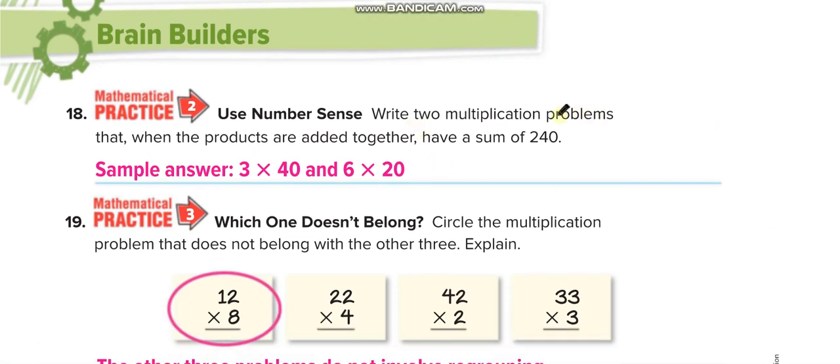Write two multiplication problems that when the products are added together have a sum of 240. So there are more—tell me more in the comment box. Like 3 times 40 is 120 and 6 times 20 is 120, so when you add 120 plus 120, you get 240. Give me another example for this question in the comment box, guys.